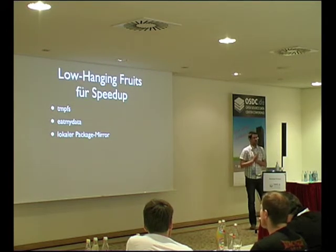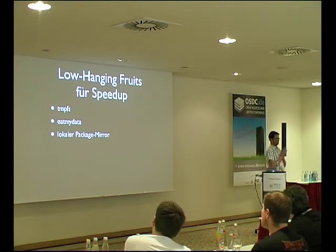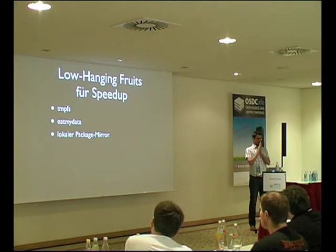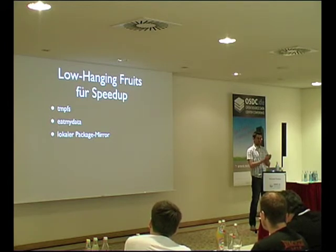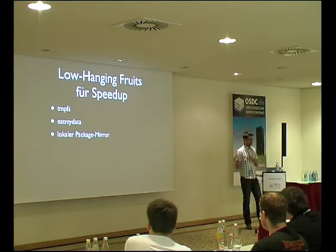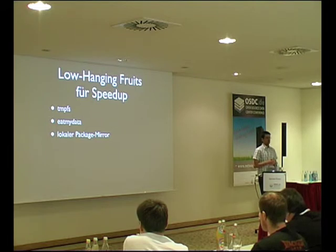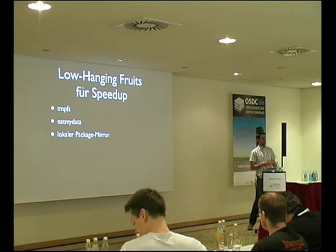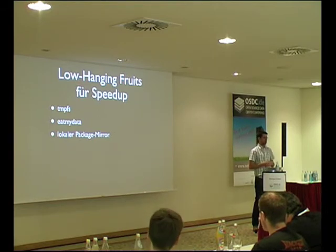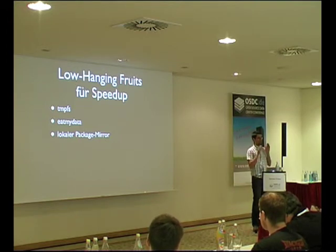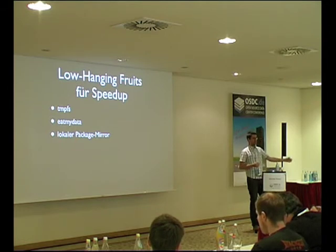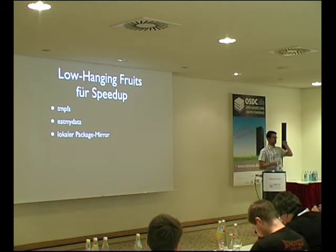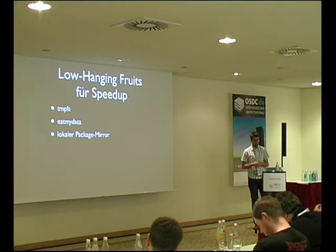Ein paar Low-Hanging-Fruits für Speedup: Statt auf lokale Disks zu gehen, einfach tmpfs nutzen oder eatmydata, das im Endeffekt das Sync abstellt. Lokaler Package-Mirror – man kann leicht einen Debian-Mirror, einen RPM-Mirror, einen Ruby-Gem-Mirror erzeugen. Das sind Sachen, die kriegt man relativ schnell hin und die ersparen Schmerzen, wenn die Netzwerkverbindung nach außen schlecht ist oder man Routing-Probleme hat. Wenn ein Mirror überlastet ist zu einem bestimmten Zeitpunkt, verändert das natürlich auch die Build-Grafiken.